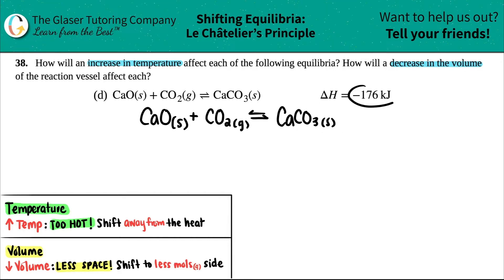That comes from the negative value. Do I care that it's negative 176? No, it could have been any negative number. A negative value means this is exothermic. In exothermic reactions you release heat, so the heat will always be on the product side. I'm going to write plus heat on my product side.